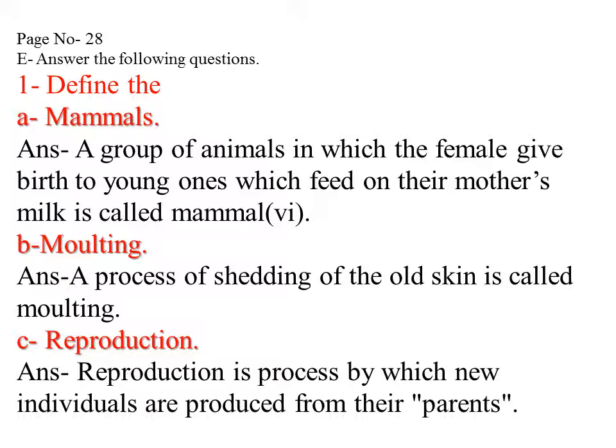Number 1: Define the following. A — Mammal: A group of animals in which the female gives birth to young ones which feed on their mother's milk is called a mammal. They are also called viviparous. B — Molting: A process of shedding of the old skin is called molting. C — Reproduction: Reproduction is a process by which new individuals are produced from their parents.